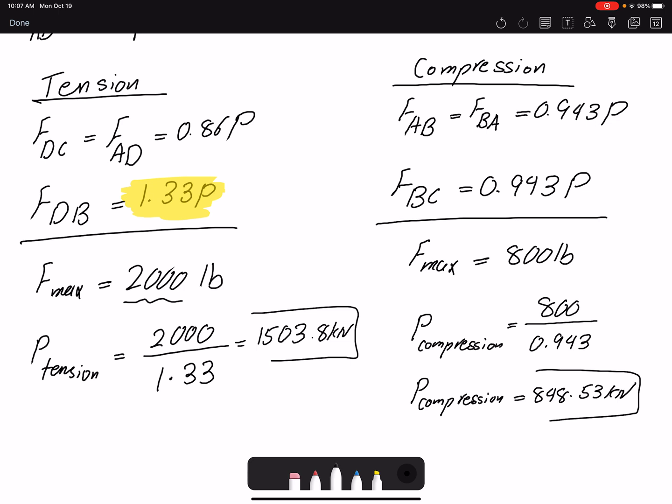Let's look at what it means. This value of 1,503, if we apply this external force, it will cause our member FDB to fail. If we apply this force, 848, it will make our member FBC fail in compression. It will cause the force to reach the maximum allowable force. Which one is lower? The compression. So that's the maximum that we could apply.